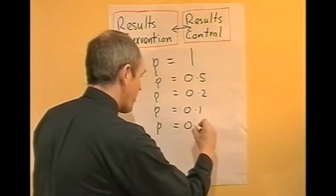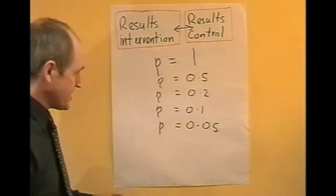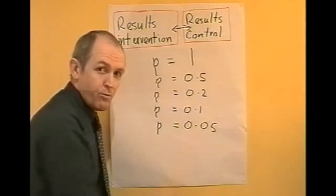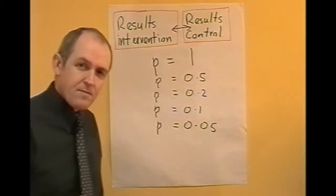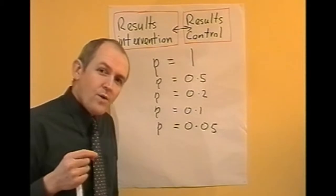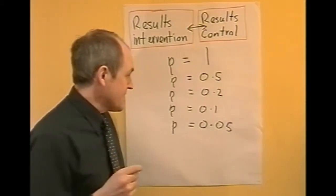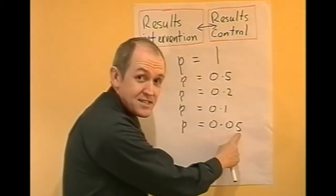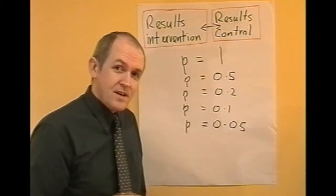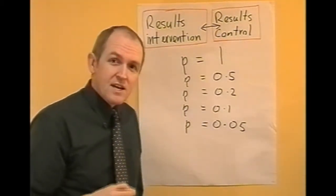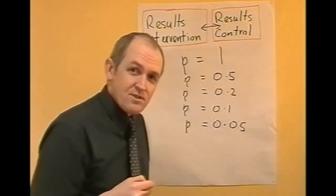p equals 0.05. Since 0.05 is half of 0.1, if p equals 0.05, what the researcher is saying is there's only a 5% chance that the result arose by chance. In other words, the researcher is now 95% sure that it is a genuine result.